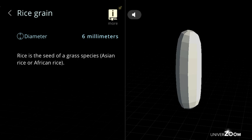Rice grain, diameter: 6 millimeters. Rice is the seed of a grass species, Asian rice or African rice.